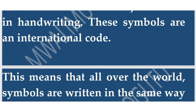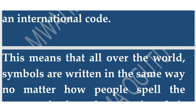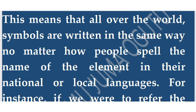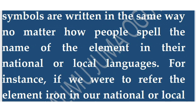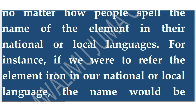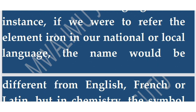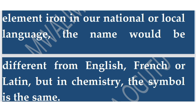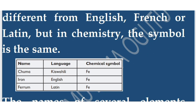This means that all over the world, symbols are written in the same way, no matter how people spell the name of the element in their national or local language. For instance, iron is called 'chuma' in Kiswahili, 'iron' in English, and 'ferrum' in Latin, but the chemical symbol remains the same regardless of the language.